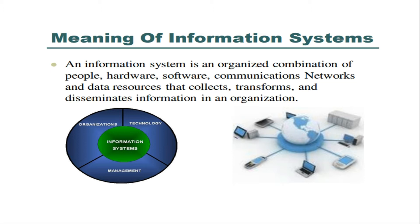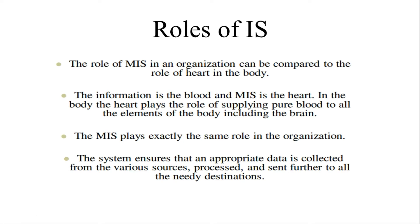If you try to understand this, an information system is an organized combination of people, hardware, software, and communication networks — all computers connected to the same thing — along with different data resources to collect data, use various data profiling tools in a particular format to transform and disseminate information within an organization. That is the meaning of information system. Now let's discuss the roles of information systems.